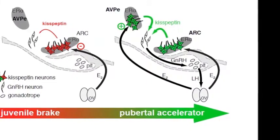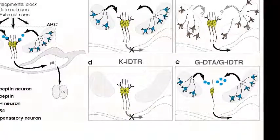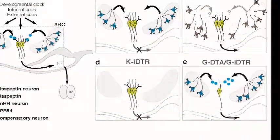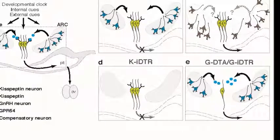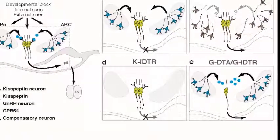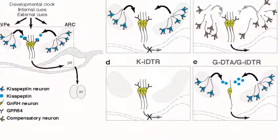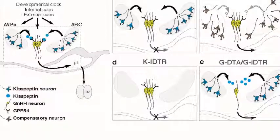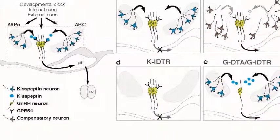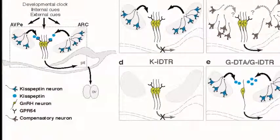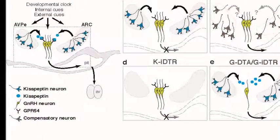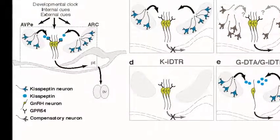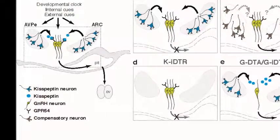Transgenic mice that cannot produce kisspeptin neuropeptides are sterile. In contrast, female mice in which kisspeptin neurons have been chronically ablated by tissue-restricted expression of a diphtheria toxin undergo puberty at the normal time and are fertile. Ulrich suggests that compensatory changes during brain development before postnatal day 20 might overcome the loss of kisspeptin neurons. In support of this, it was shown that acute ablation of kisspeptin neurons in adult females causes infertility, possibly because neuronal compensation cannot occur once brain development is complete. The nature of these compensatory changes remains to be established, but these data raise the interesting possibility of kisspeptin-independent pathways stimulating GnRH release to maintain fertility.